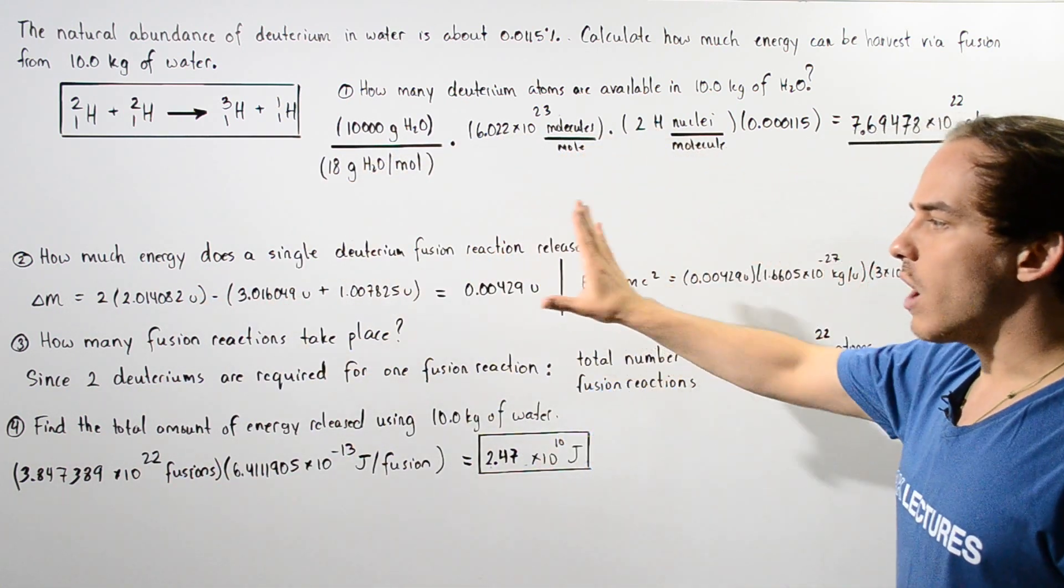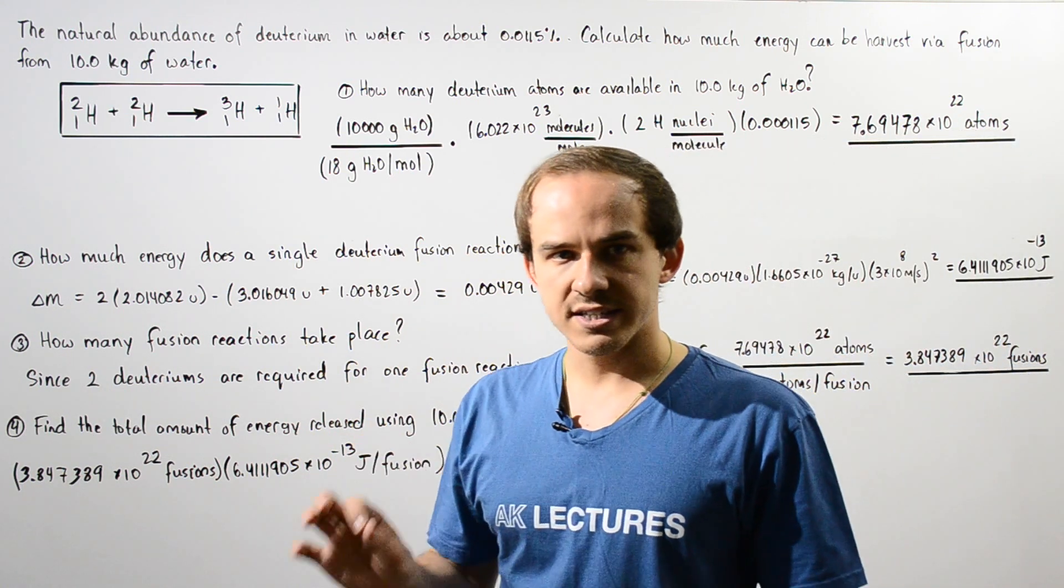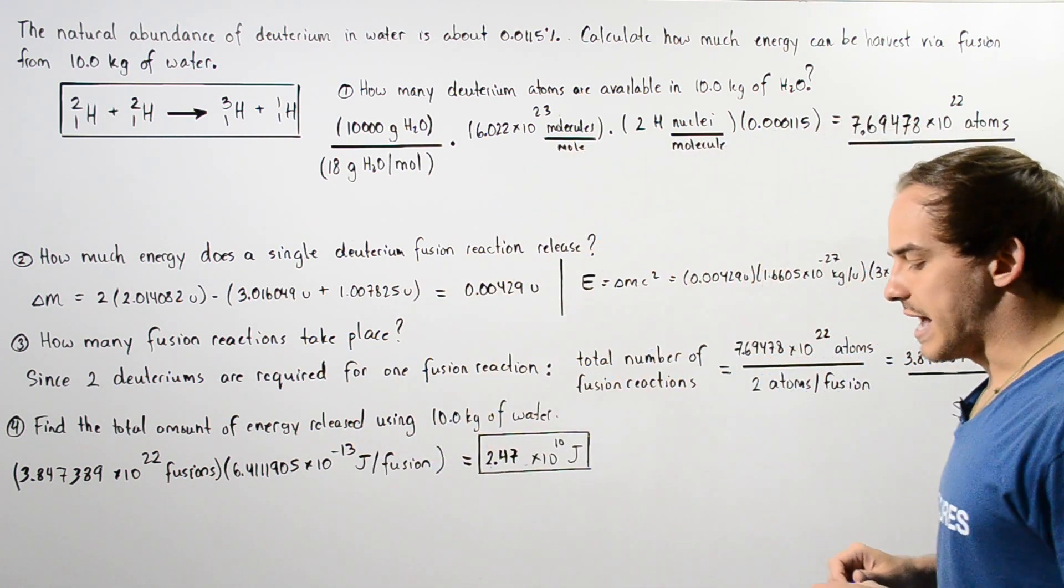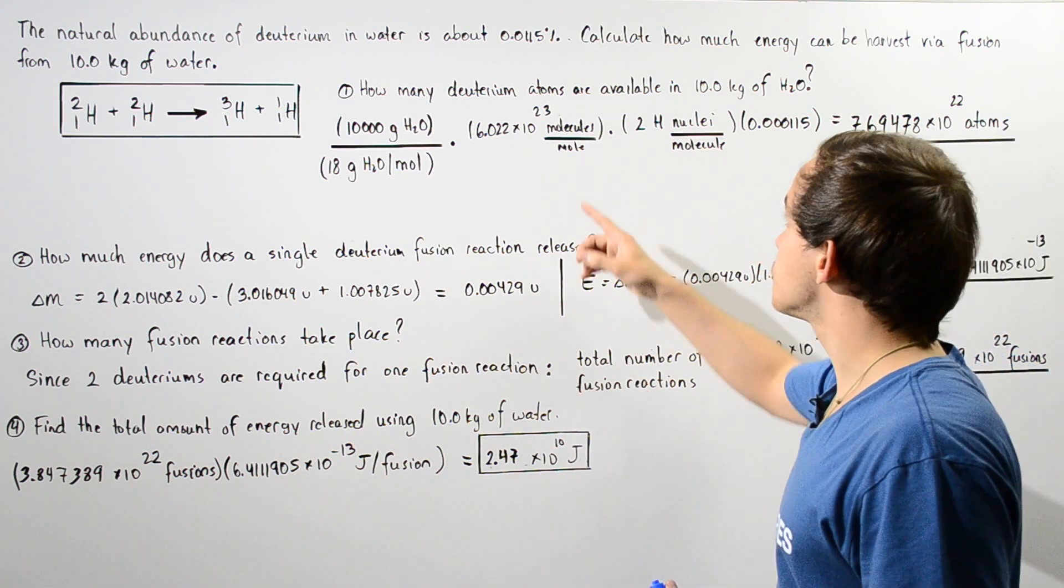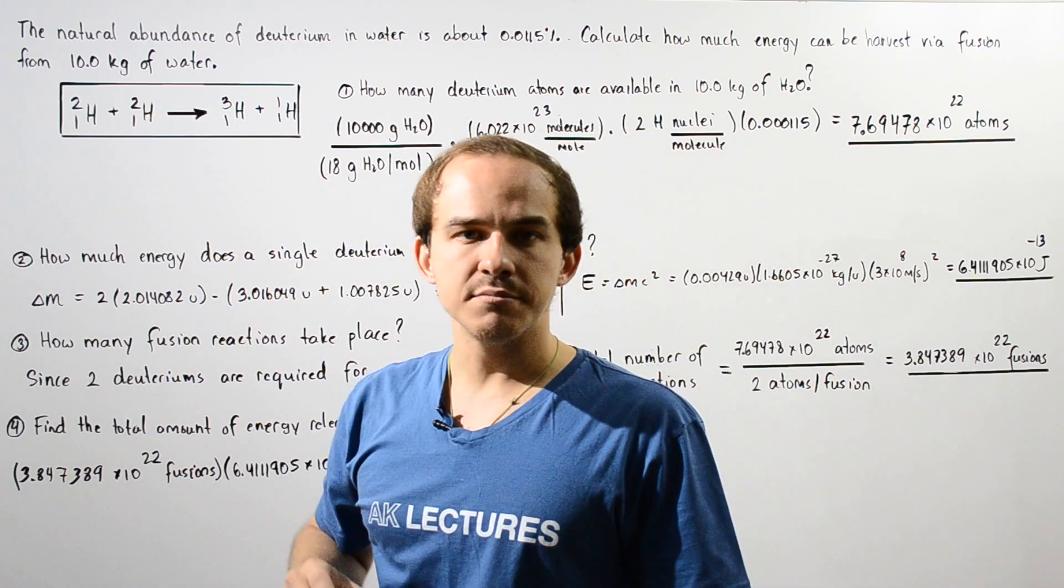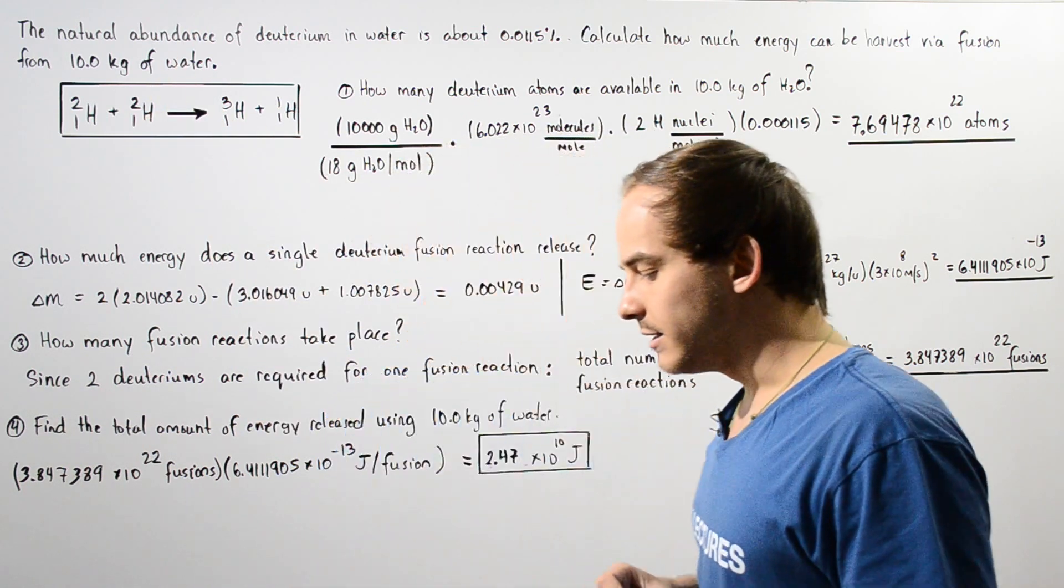So I broke down this example into four steps. Let's begin with step one. So how many deuterium atoms are available in 10 kilograms of water? To calculate this,